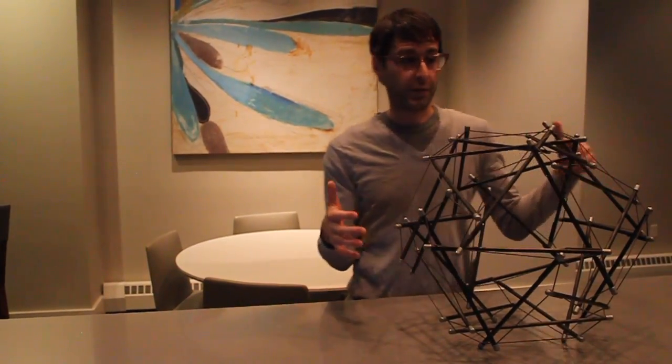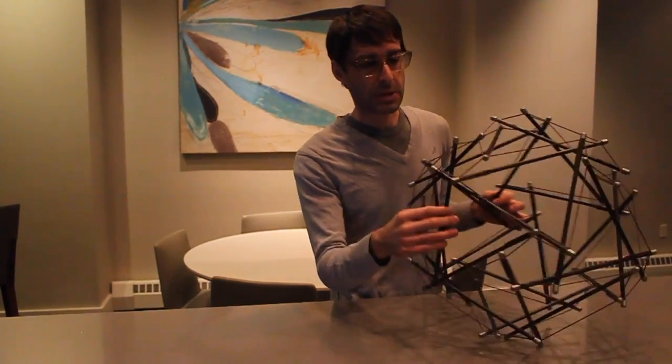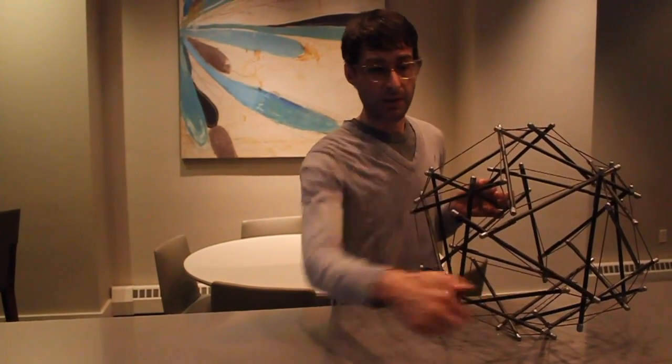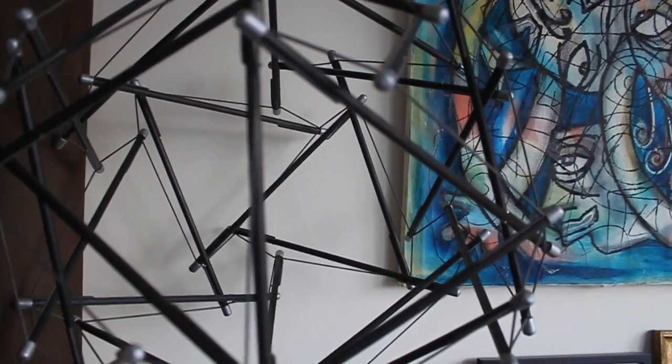Here we have a geometric shape called icosahedron. You can see it's a number of these pentagonal shapes surrounded by five triangles. One, two, three, four, five.